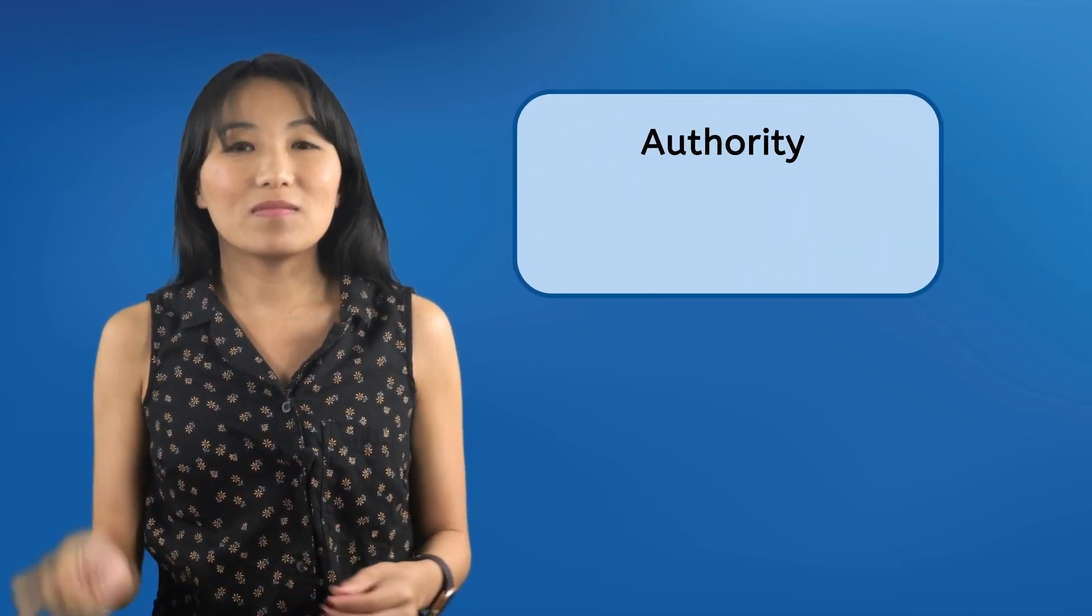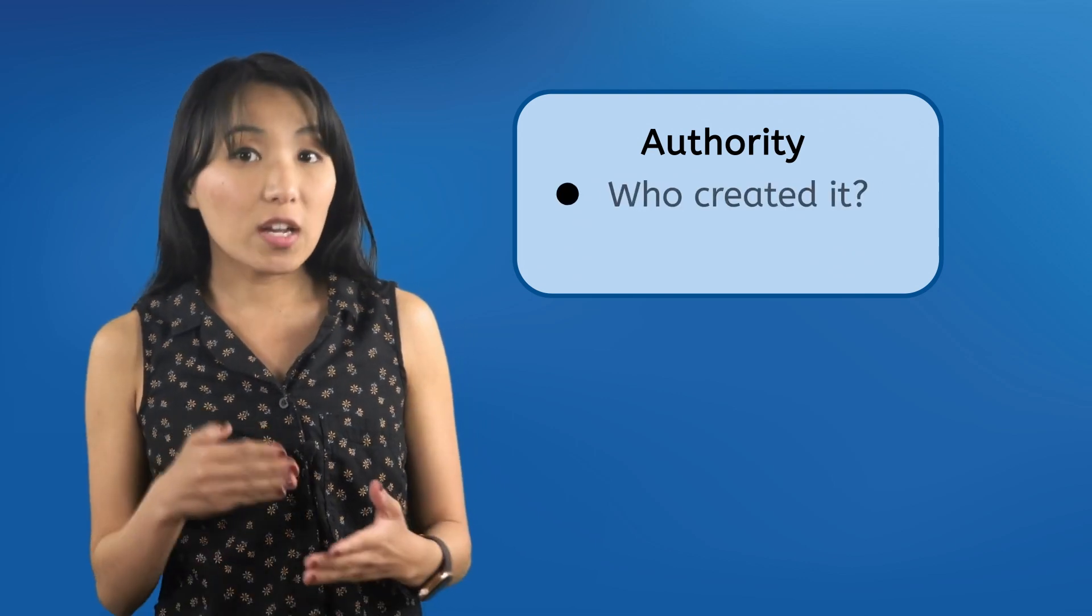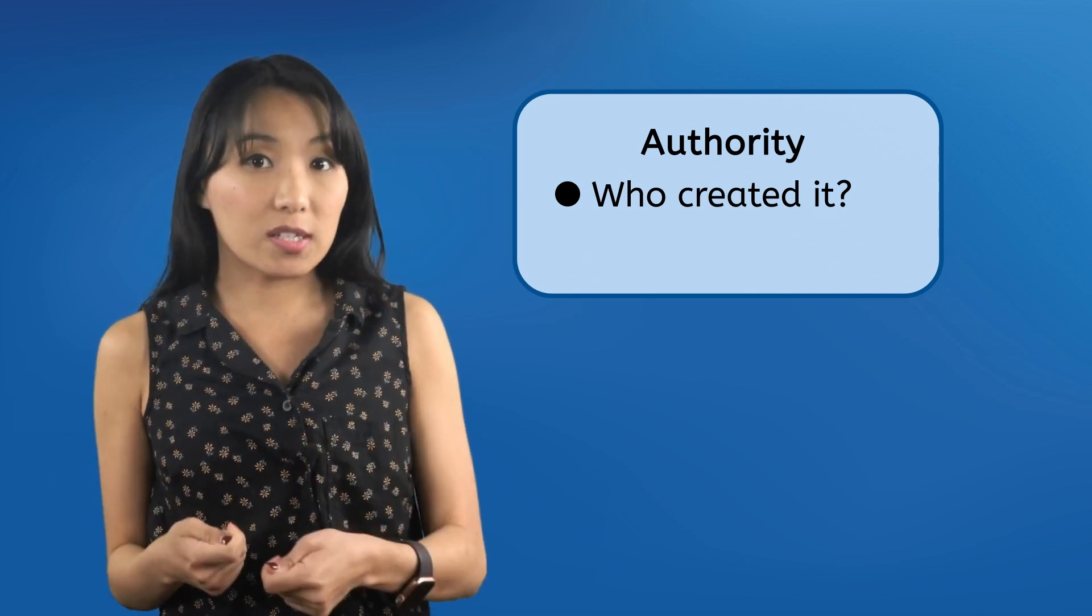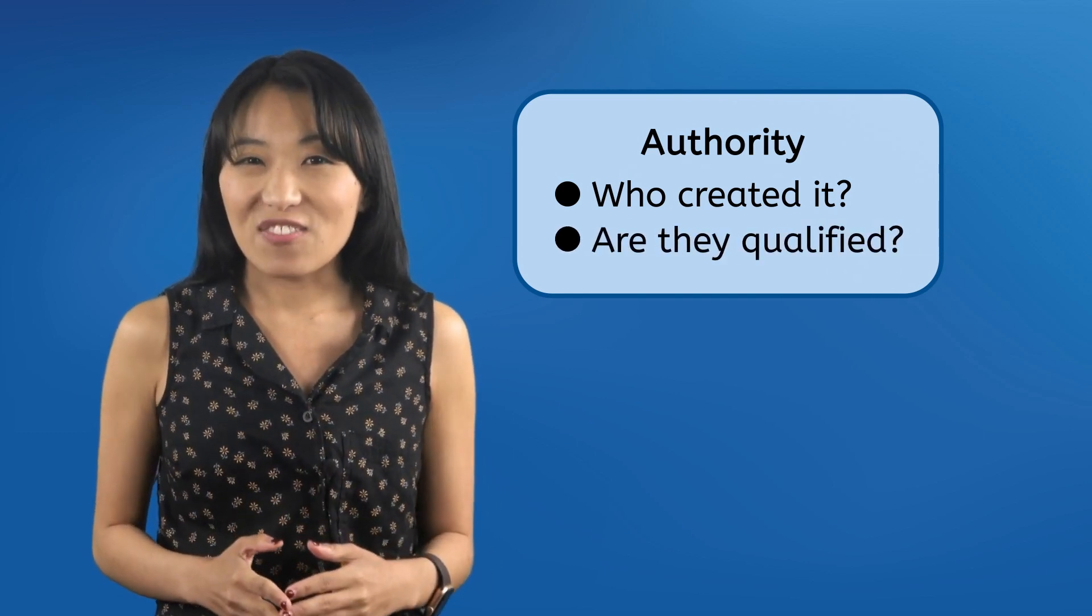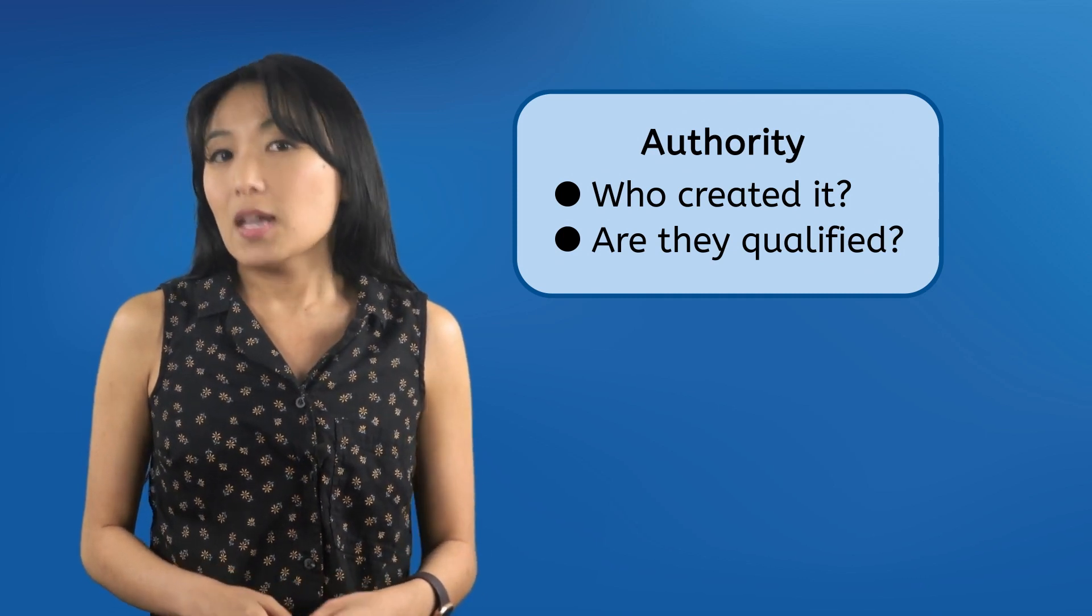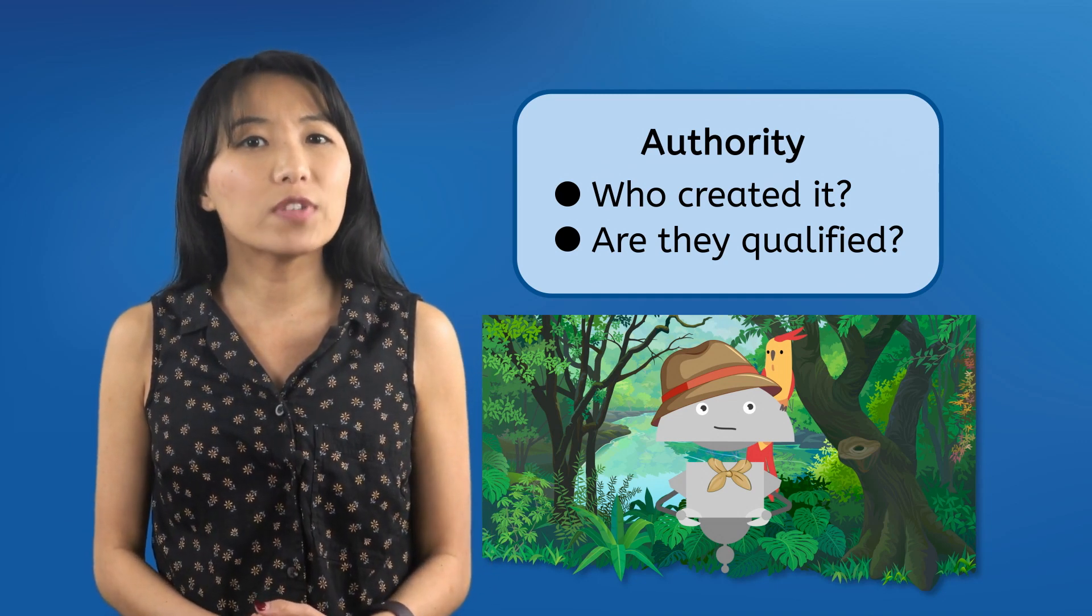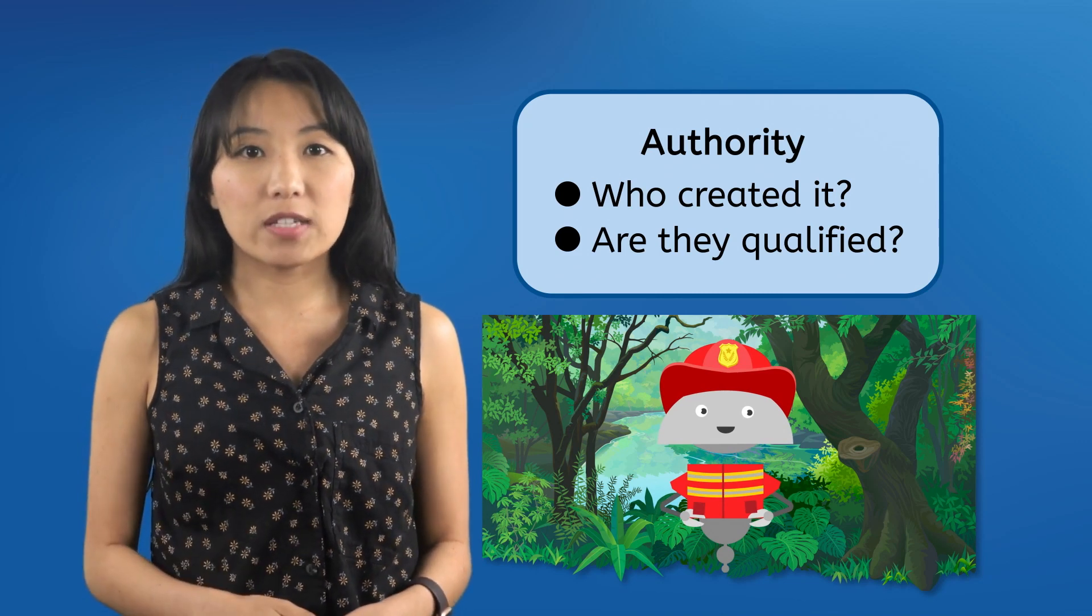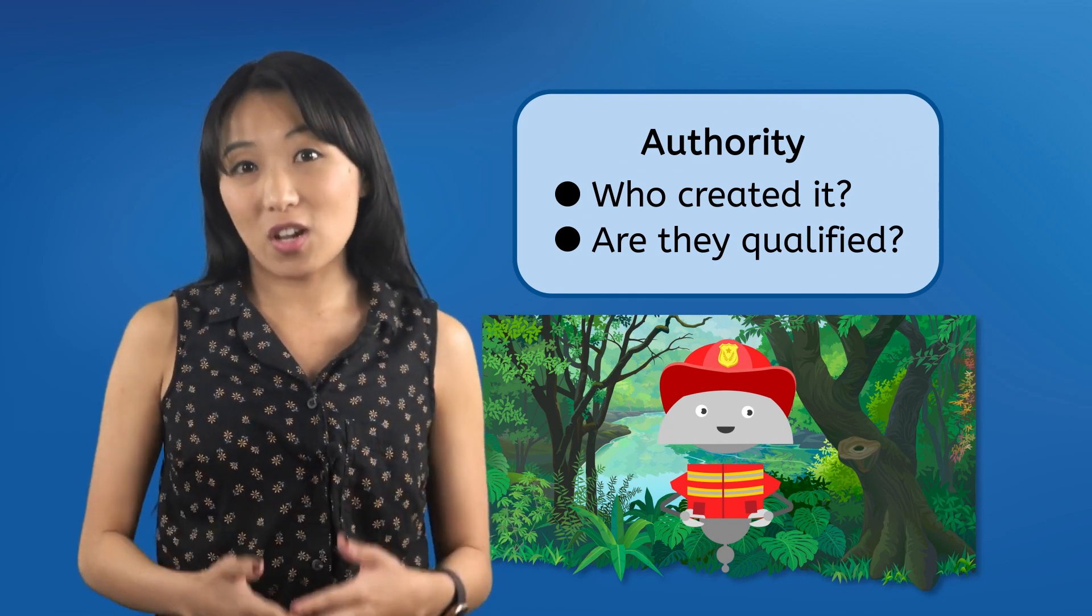The A in TRAP, well one of the A's, reminds you to check the authority of your source. Check who created or published the information. It could be a person, a company, an organization, or even a government. Once you know who the creator is, look into their background and find out whether they're qualified to be publishing information on this topic. A tropical ecologist is totally qualified to create an informative video about animals in the rainforest. A firefighter is probably not qualified to publish information about rainforest animals. Authority is all about whether you can trust the creator to know what they're talking about.